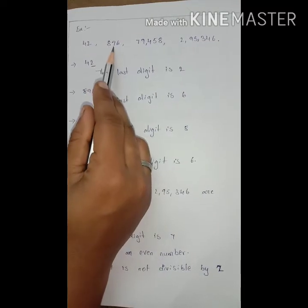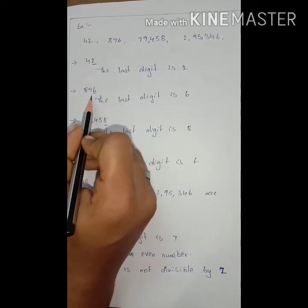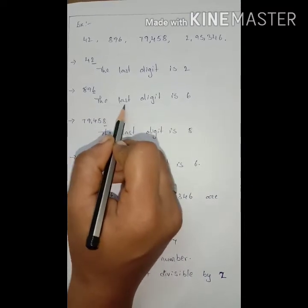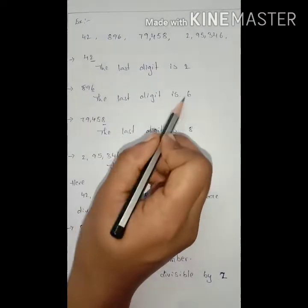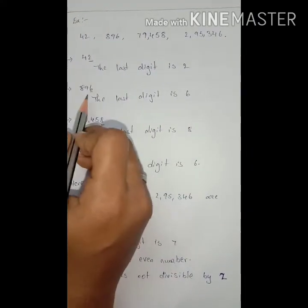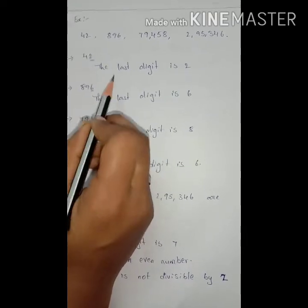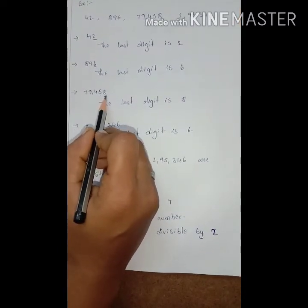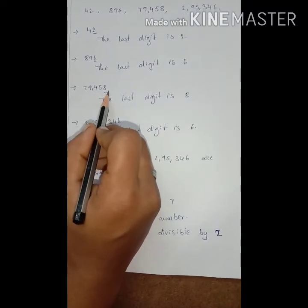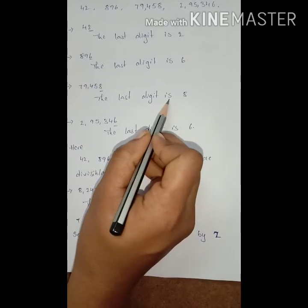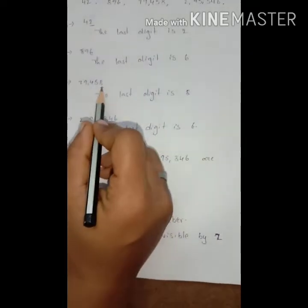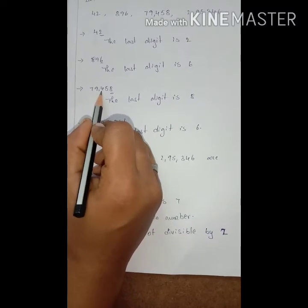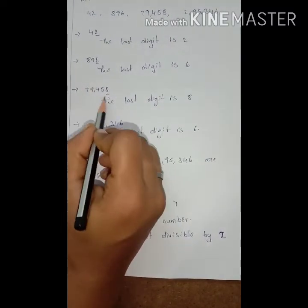The next example is 896. In 896, the last digit is 6. Since 6 is an even number, 896 is divisible by 2. The third one is 79,458. In 79,458, the last digit is 8. Since 8 is even, the whole number 79,458 is divisible by 2.